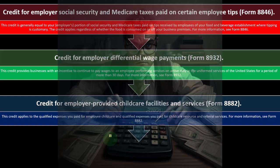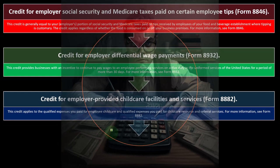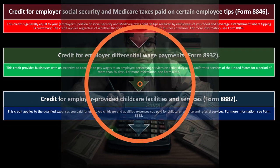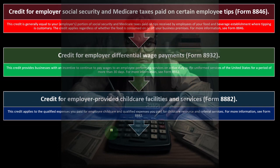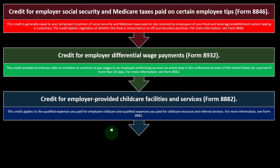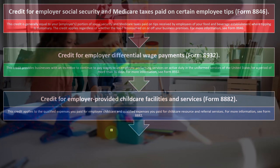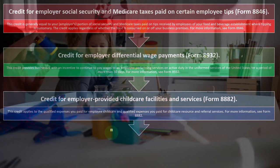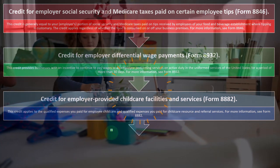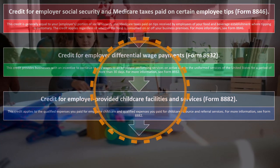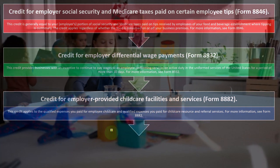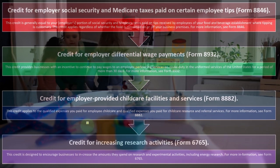Credit for Employer-Provided Child Care Facilities and Services is on Form 8882. This credit applies to the qualified expenses you paid for employee child care and qualified expenses you paid for child care resource and referral services. For more information, see Form 8882.